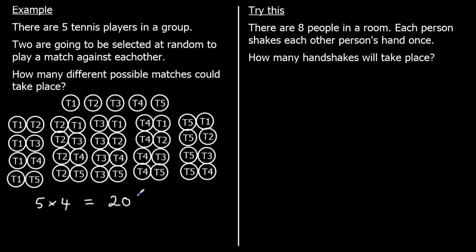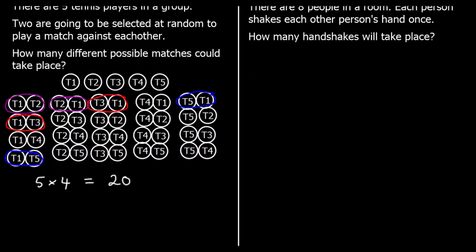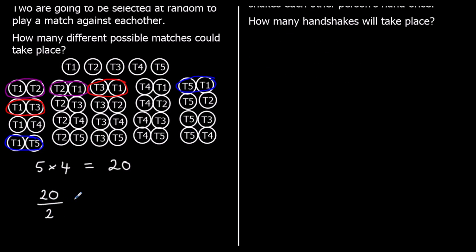However, we have duplicates in here. Tennis player one and tennis player two is the same match as tennis player two and tennis player one. The question asks how many different possible matches could take place — and these are the same match. You'll find every match has a duplicate, so what we actually need to do is halve our answer. Halving 20 gives us 10 different possible matches.